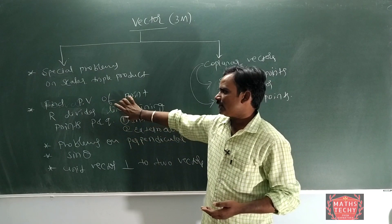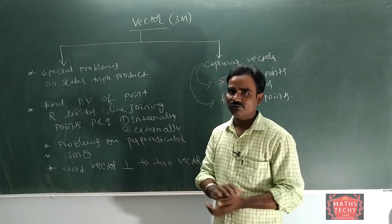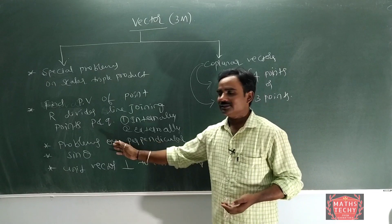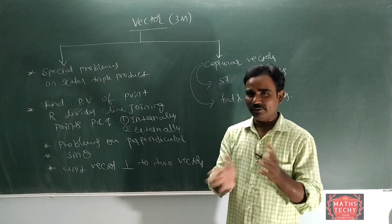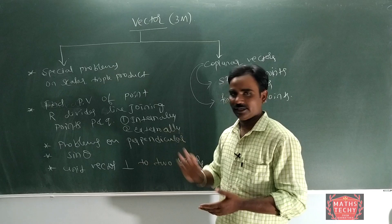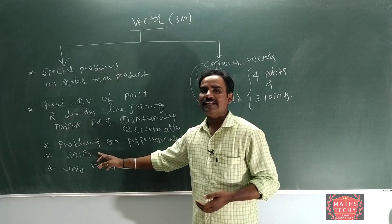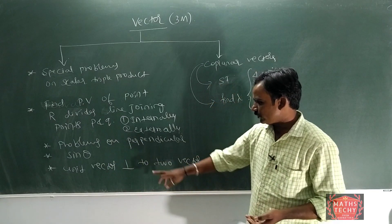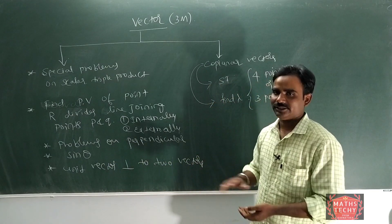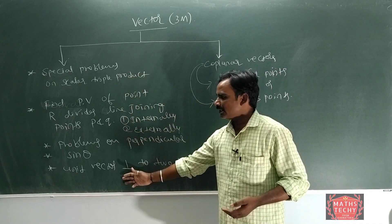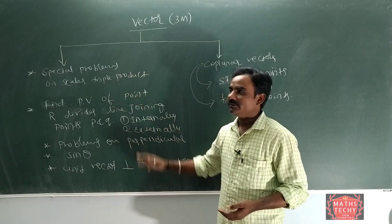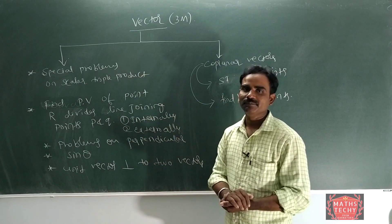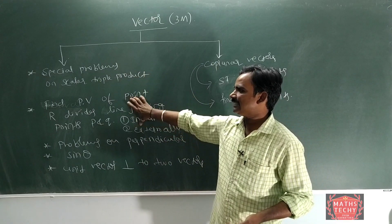There is derivation in this section, and it is very simple. The problems are on perpendicular conditions. A plus B minus B is the vector. The perpendicular condition uses sin theta — this is rare but very simple. The unit vector is perpendicular to two vectors.